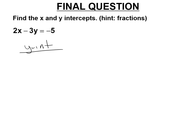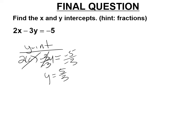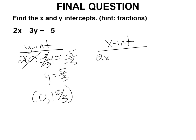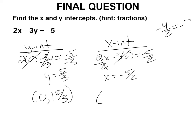For the final question: y-intercept, x equal to 0. Divide both sides by negative 3. Negative 5 over negative 3 is 5 thirds. So the y-intercept is 0, 1 and 2 thirds — because 3 thirds is 1, so 5 thirds is 1 and 2 thirds. For the x-intercept, y equals 0. Divide both sides by 2. x equals negative 5 halves. Negative 4 halves is negative 2, so this is negative 2 and a half, 0. Good luck on the homework.